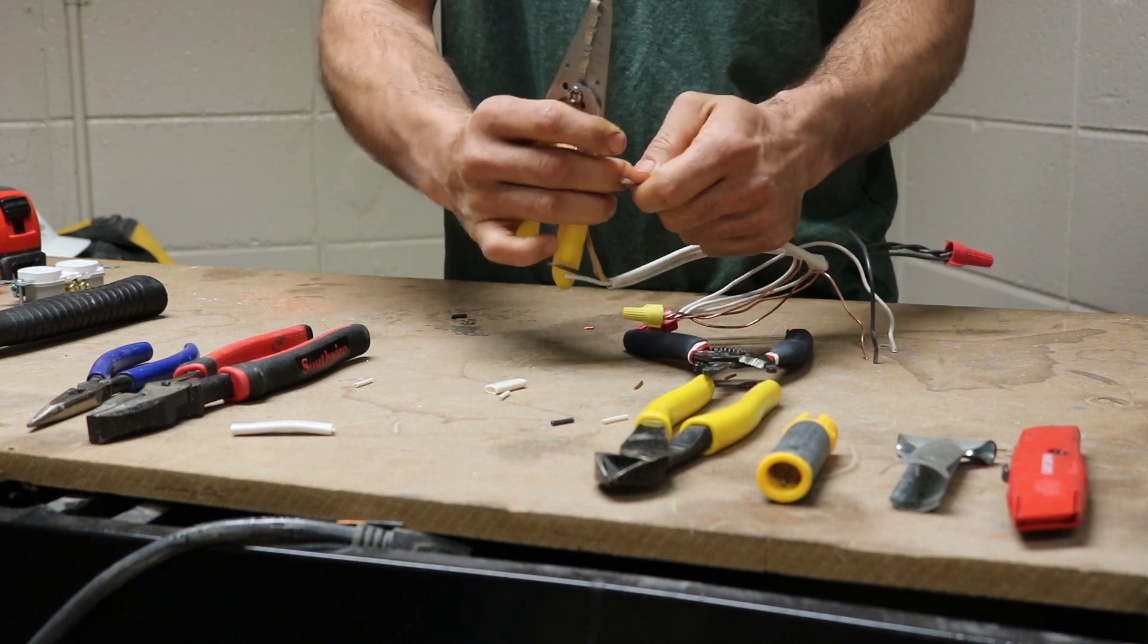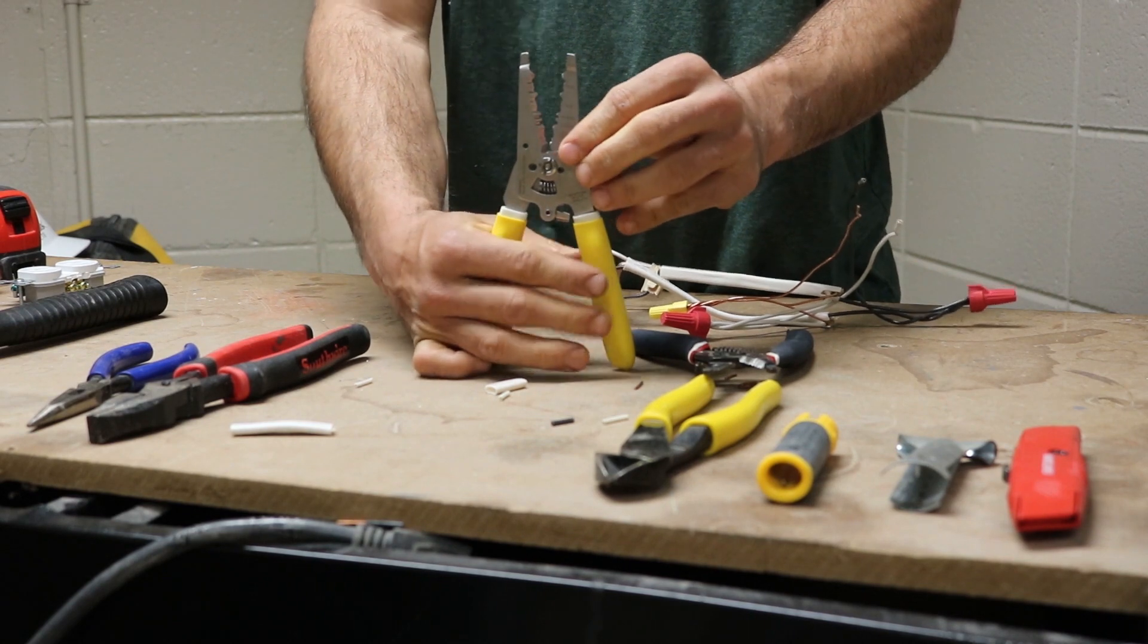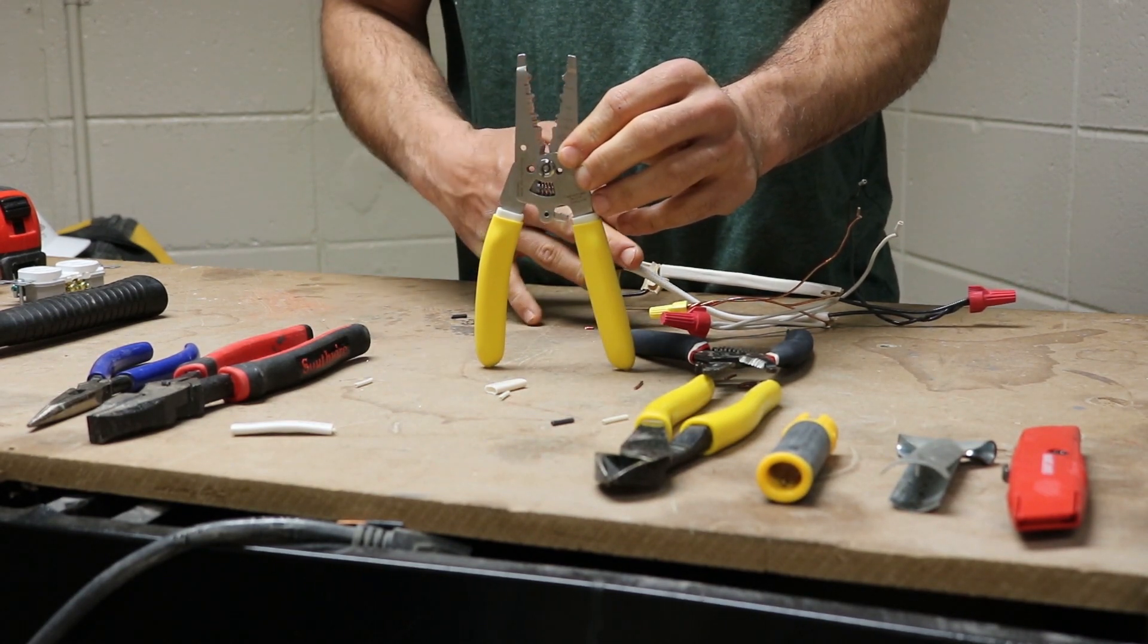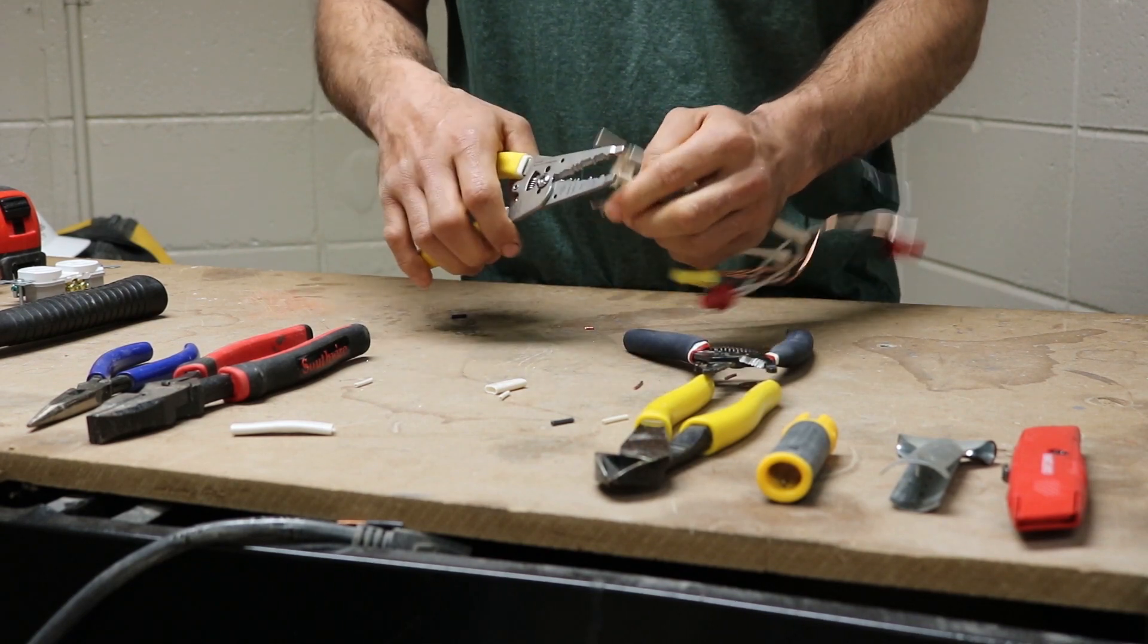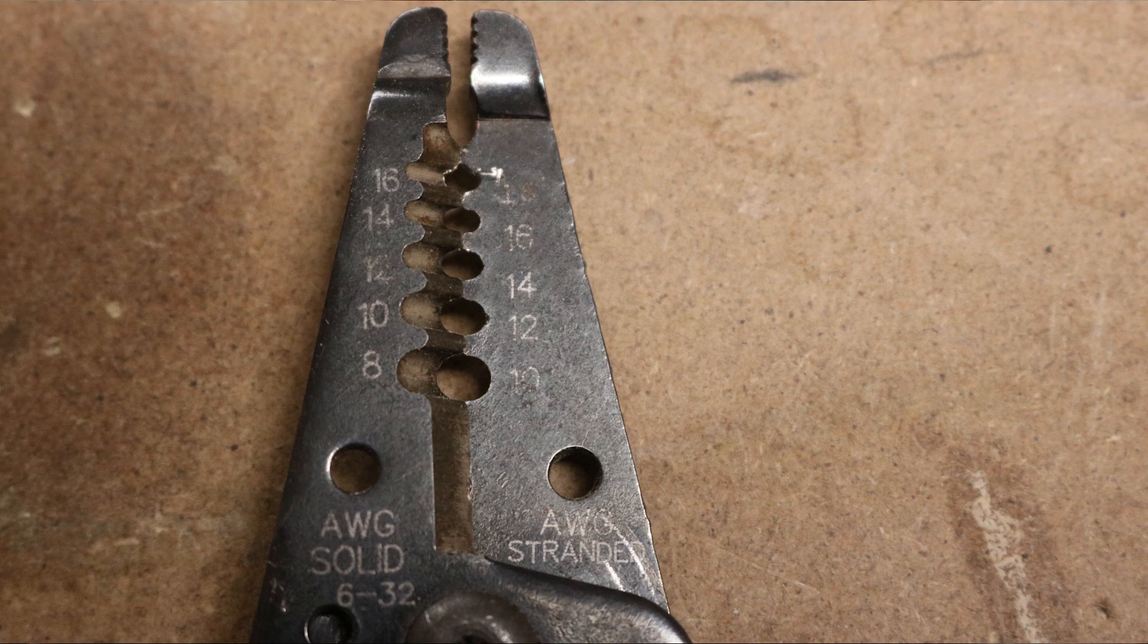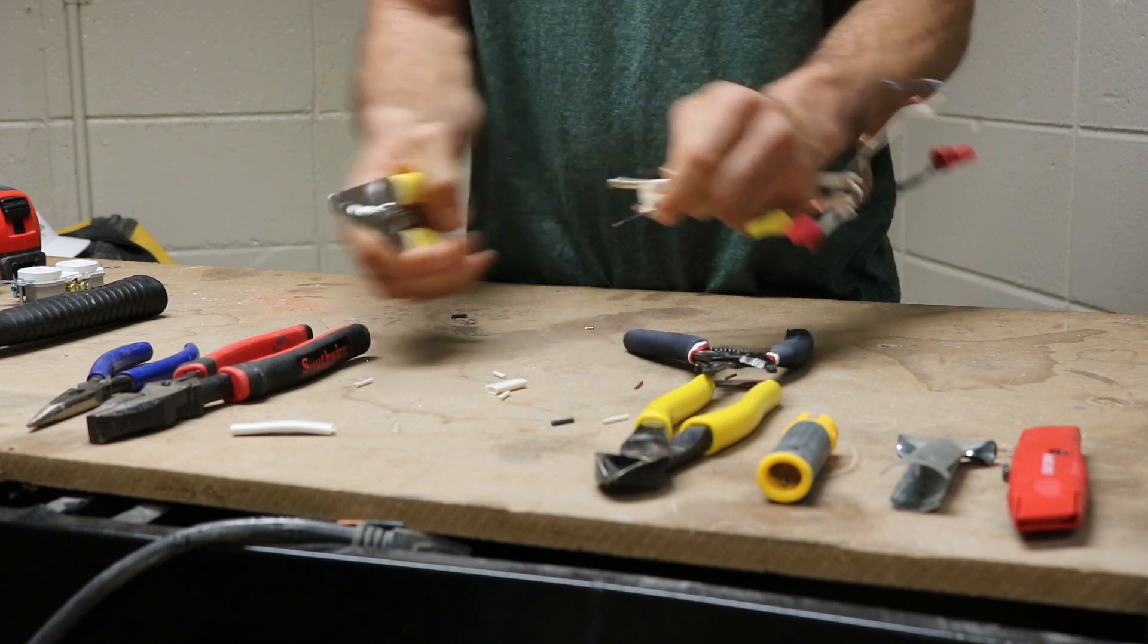When you are using the strip part, you must know what size wire you're working with. So this is 14 gauge wire. So I will find the 14 solid hole, and I will just pinch down, and it will peel the sheathing right off. Just like that.